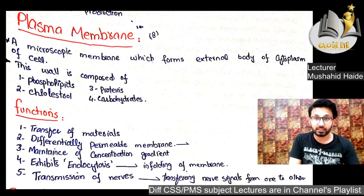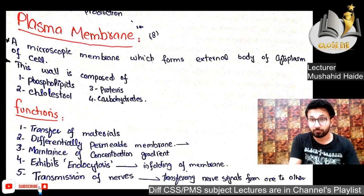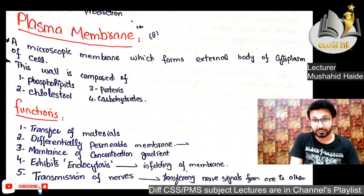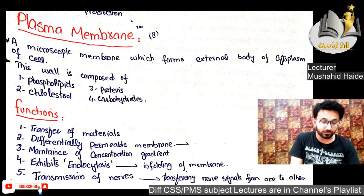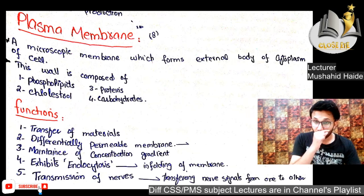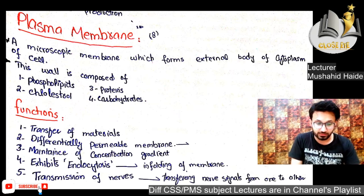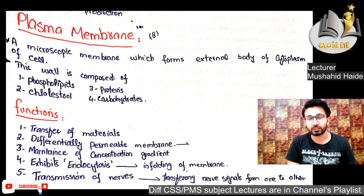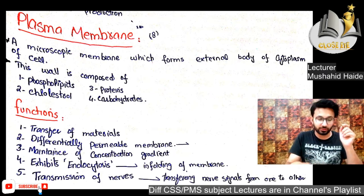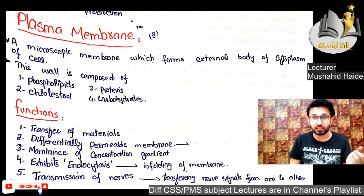The plasma membrane transfers materials in and out of the cell. Its second function is that it is a differentially permeable membrane with selective permeability. Third, it maintains concentration gradients. Fourth, it exhibits the phenomenon of endocytosis — because the membrane is not solid but liquid, it can infold. Fifth, it is involved in nerve transmission.